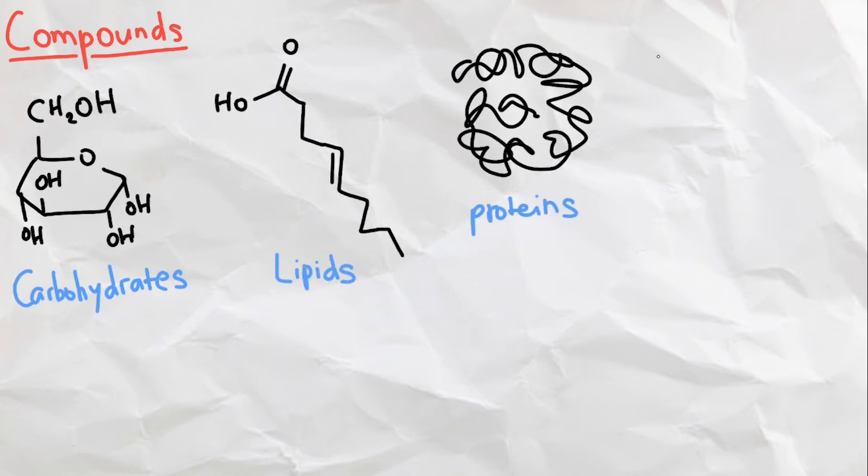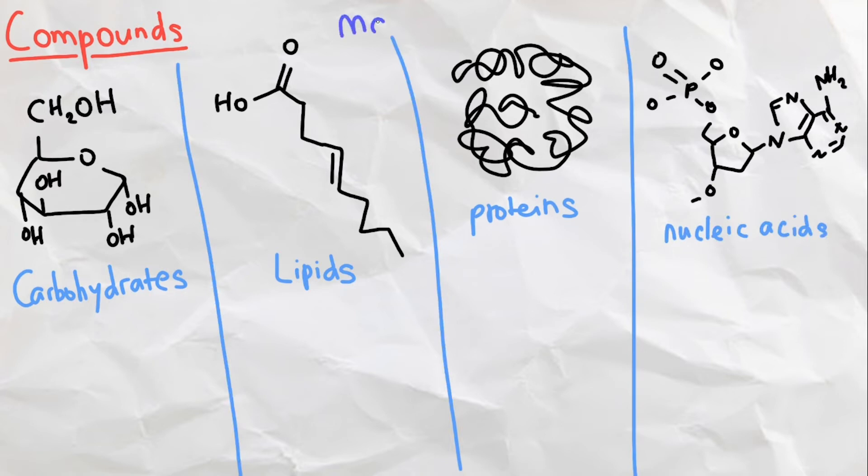There are four major organic compounds that make life possible: carbohydrates, lipids, proteins, and nucleic acids. They are also known as macronutrients, which are present in every living organism no matter the size.